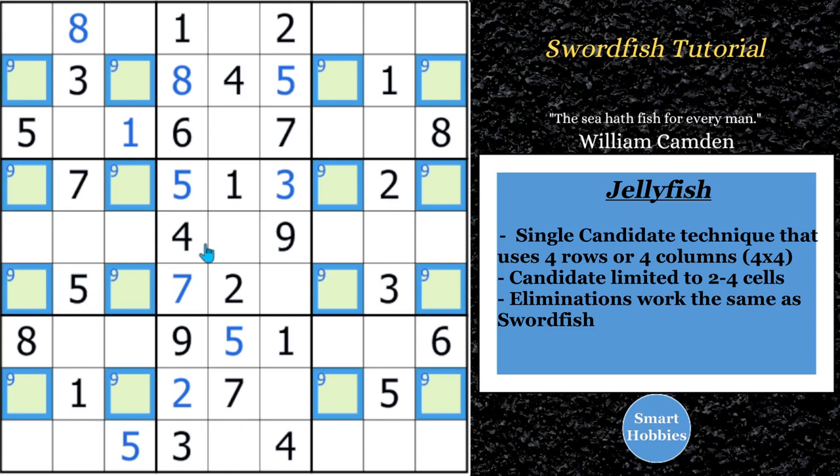This is called a jellyfish. So, when you take that swordfish strategy and you go to a four by four, it's a Sudoku jellyfish. And that's what this is. And what a jellyfish means, it's the same thing as a swordfish. What it means is that in rows two, four, six, and eight, the nines are limited to the same four columns. Columns one, three, seven, and nine. So, you can eliminate all the other nines.